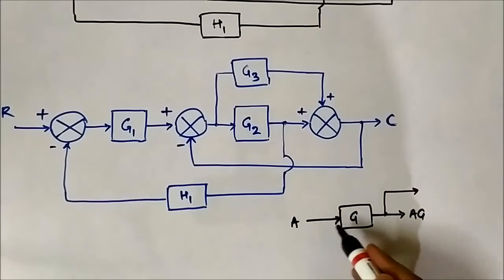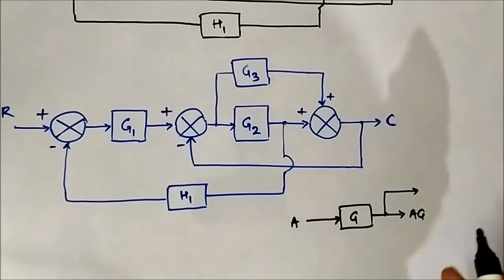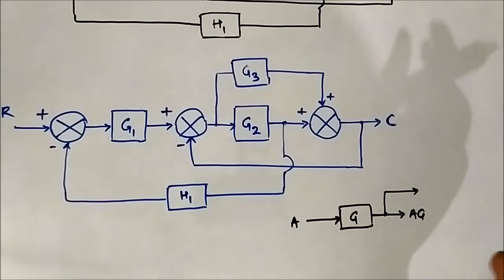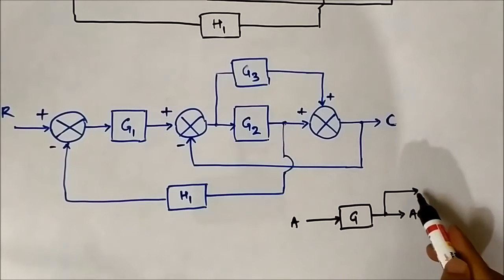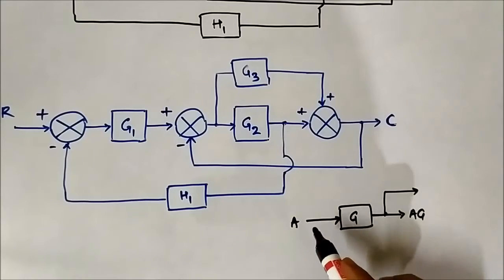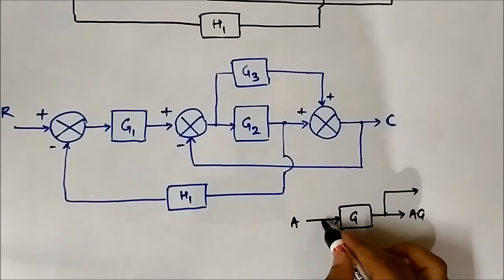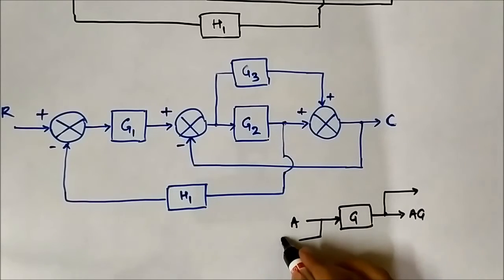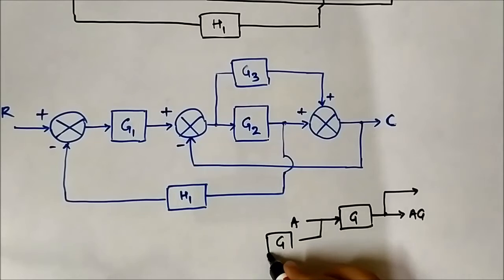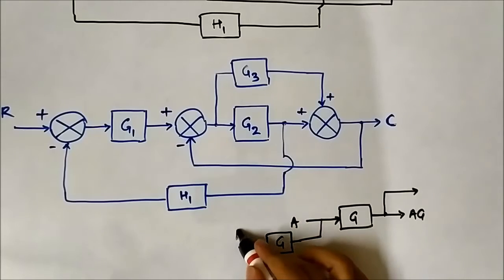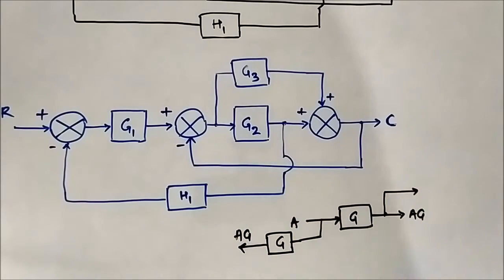When we shift a takeoff point behind a block, the value of the takeoff point should remain unchanged. So if we shift the takeoff point behind the block, the value should remain A·G. But behind the block the signal is A, so if we add a block G there, the output becomes A·G. This is the basic principle we will apply here.